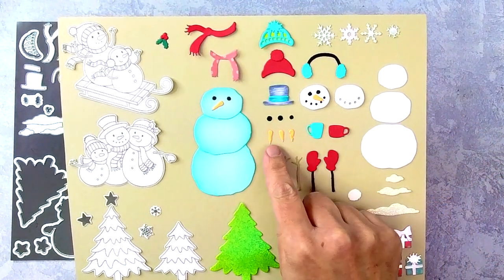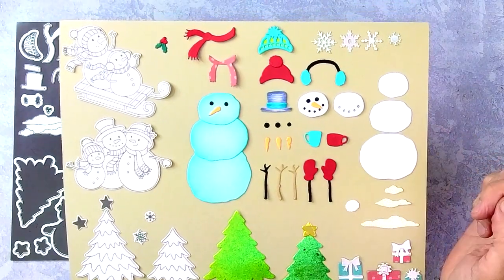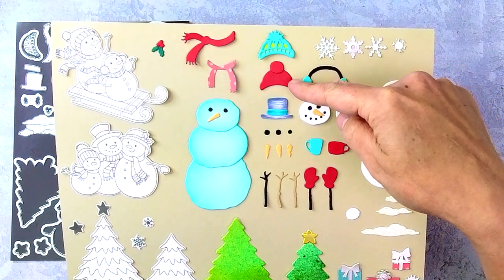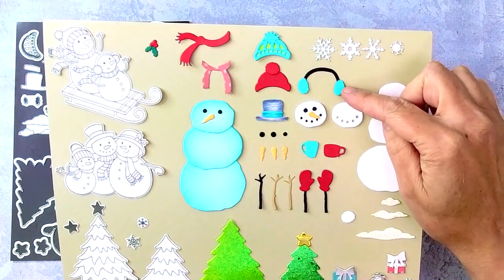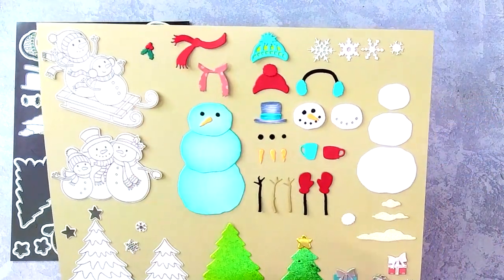But these Snowman Builder dies are really fun. You can do them with faces, you can add buttons, different noses, arms, gloves, little tea or coffee mugs, a couple of different hats, scarves, earmuffs. I mean, the sky is the limit. There's even a little holly berry, and then there are four beautiful snowflakes that you can add to the sky.